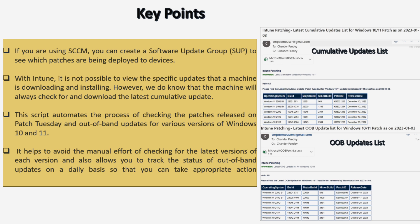We do know that the machine will always check for and download the latest cumulative update. This script automates the process of checking the patch released on Patch Tuesday and out-of-band updates for various versions of Windows 10 and 11. It helps avoid manual effort and allows you to track the status of OOB updates daily so you can take appropriate action whenever a new OOB update is released by Microsoft.